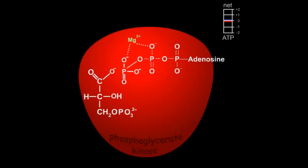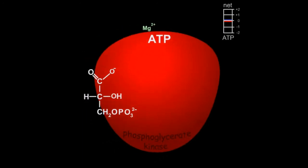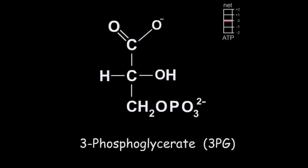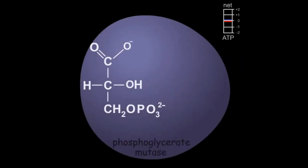The next reaction is catalyzed by phosphoglycerate kinase. In this reaction, the synthesis of ATP is driven by the high negative free energy of hydrolysis of the 1,3-bisphosphoglycerate acyl phosphate. This reaction occurs by nucleophilic attack of ADP's terminal phosphoryl group on the C1 phosphoryl group of 1,3-bisphosphoglycerate to yield 3-phosphoglycerate and ATP. Since two molecules of ATP are generated for each glucose molecule...